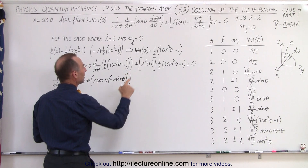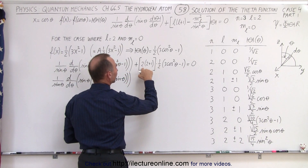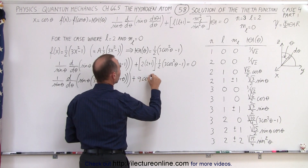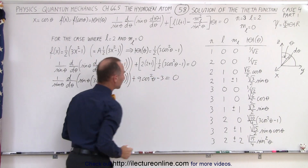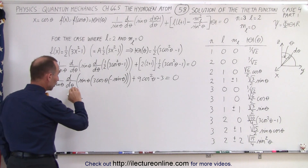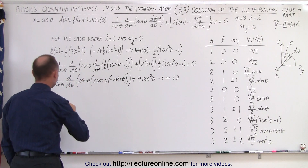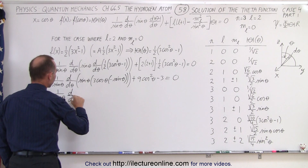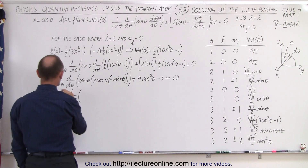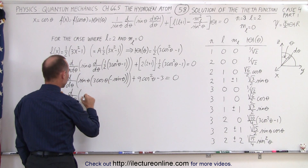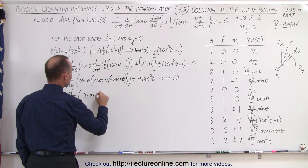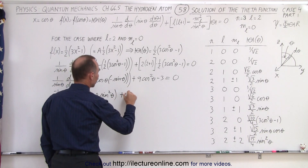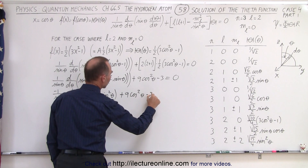The 1 half times 2 cancels, leaving us with a 3. Multiplying that out, we get plus 9 times cosine squared of theta minus 3, equals 0. Now we can combine these terms and take the derivative again. So we get 1 over sine of theta times the derivative with respect to theta. The negative goes in front, so we end up with 3 times cosine of theta times sine squared of theta, plus 9 times cosine squared of theta minus 3, equals 0.